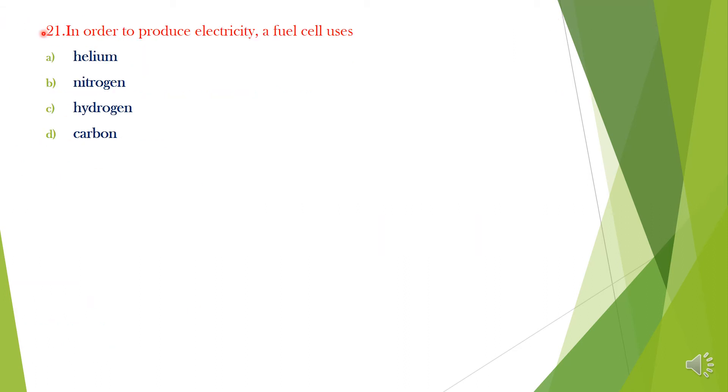Question 21. In order to produce electricity, a fuel cell uses: A. Helium, B. Nitrogen, C. Hydrogen, D. Carbon. Option C, Hydrogen.